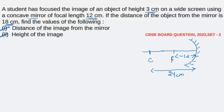The focal length is 12 — that is, the focus is here — and 24 centimeter is the center of curvature. Our object is at 18 centimeter, which means the object is somewhere between C and F. So here lies our object where the distance is 18 centimeter. This is 18 centimeter.